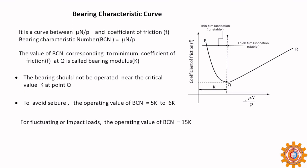The bearing characteristic curve is drawn between coefficient of friction and the bearing characteristic number BCN, which is μ (viscosity of oil) times N (speed of journal) divided by bearing pressure P.